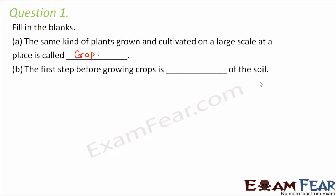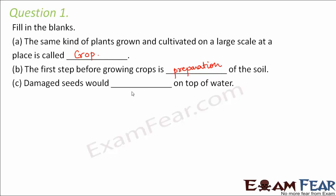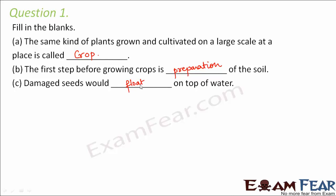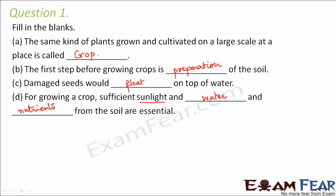Damaged seeds would float on top of water because they are hollow from inside, making them lighter. For growing a crop, sufficient sunlight, water, and nutrients from the soil are essential. Plants need water, which is why we have irrigation in place, and we apply manures and fertilizers to supply nutrients. So sunlight, water, and nutrients are the three important things essential for the growth of a crop.